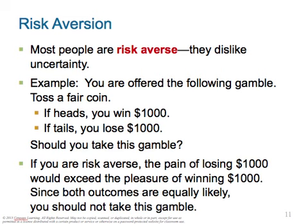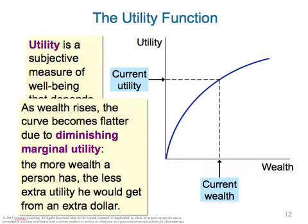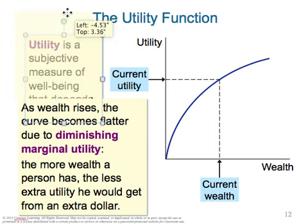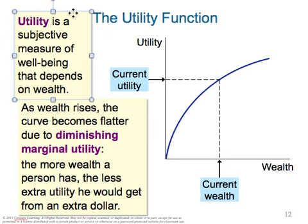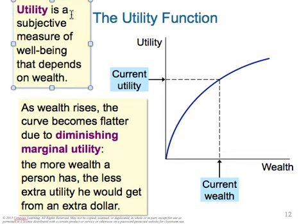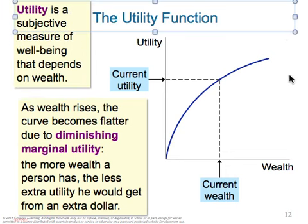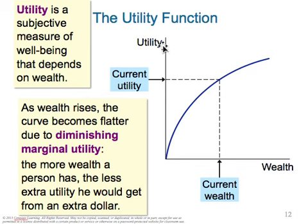You'll want to know about risk aversion when investing in 401(k)s and so on. Utility is a subjective measure of well-being that depends on wealth — basically how happy you are with certain levels of wealth. As wealth rises, the utility curve becomes flatter due to diminishing marginal utility. The more wealth a person has, the less extra utility he or she gets from an extra dollar.